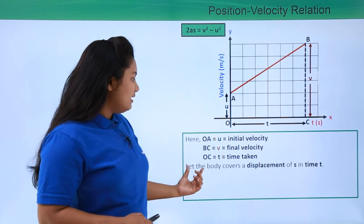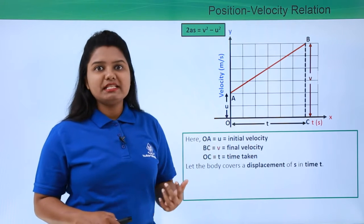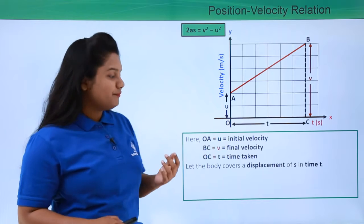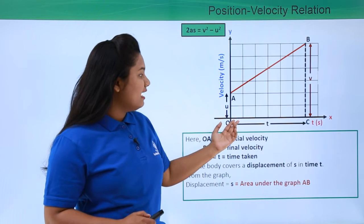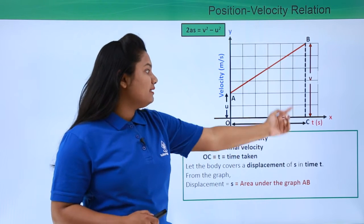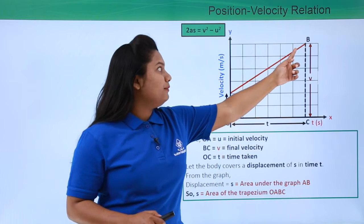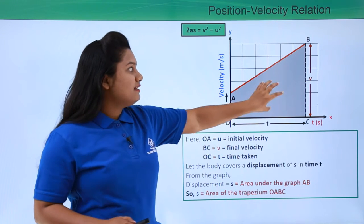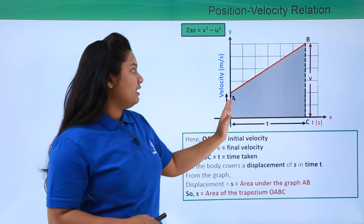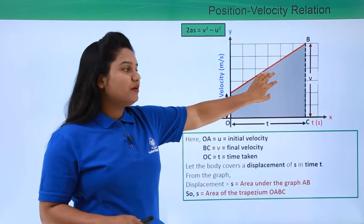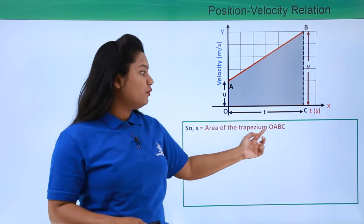Let the body cover a displacement of s in time t. The displacement of the body from the graph can be calculated as the area of the trapezium OABC, which is the area under the graph AB. This shaded area gives us the displacement of the body from point A to point B. So s, that is the displacement, is given by the area of the trapezium OABC.